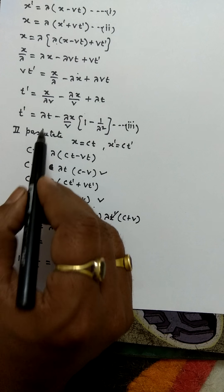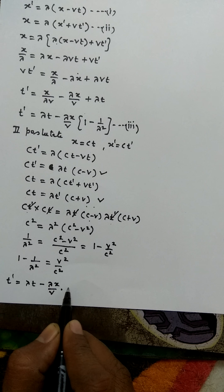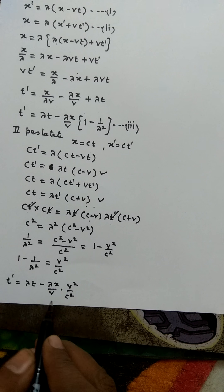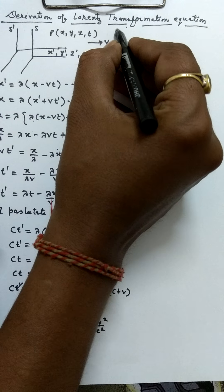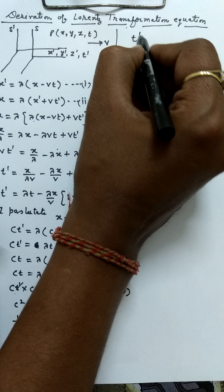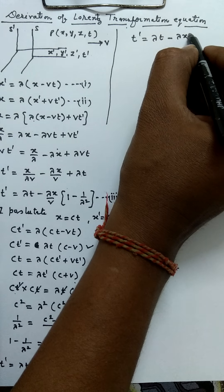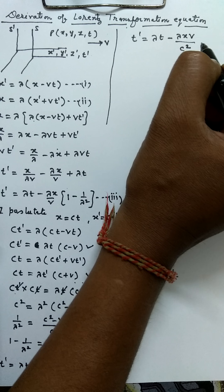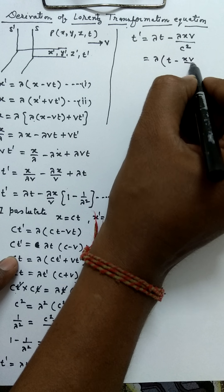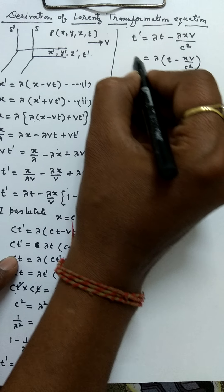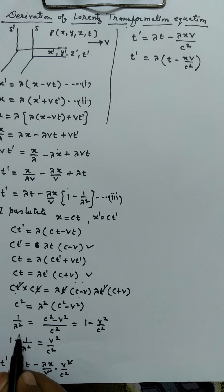Now put this value into equation number 3. Equation 3 becomes: t dash equals lambda times t minus lambda x upon v times (v squared upon c squared). Cancelling v, t dash equals lambda times (t minus xv upon c squared). Taking lambda common: t dash equals lambda times (t minus xv upon c squared). This is the expression for t dash.